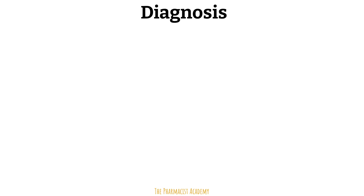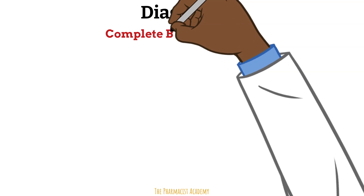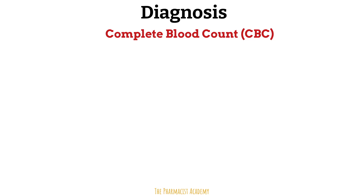We'll do a blood test and analyze the complete blood count, or CBC. I have a video on how to interpret the different components of a CBC, so check it out. The CBC will help us confirm if the patient is anemic and also give us a clue about what may be causing the anemia. In this video, I'm focusing on the three most important components.